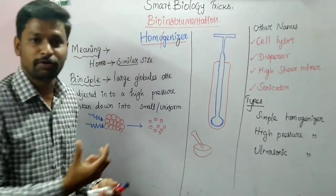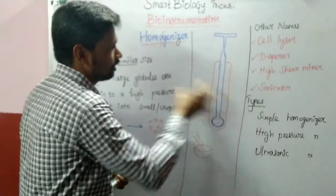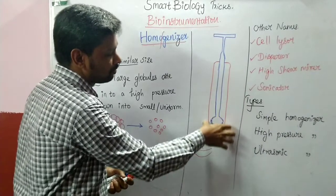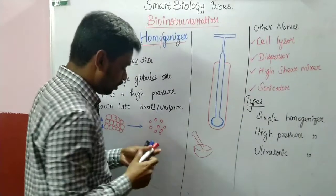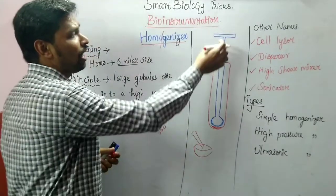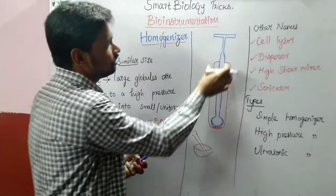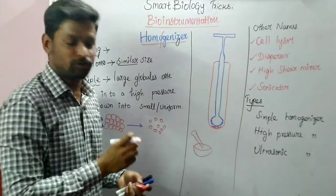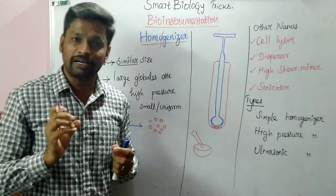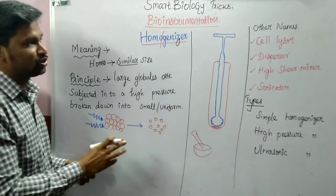We use mortar and pestle in UNANI medicines. In this equipment, there is a narrow test tube into which you add your sample. With the help of the pestle, you grind the sample. During grinding, large tissues are broken down. That is the ultimate principle of the homogenizer.